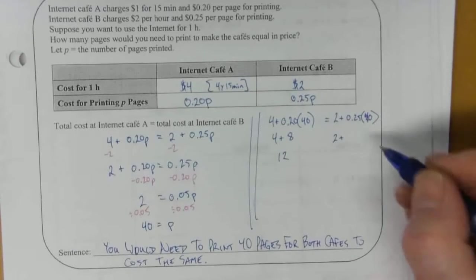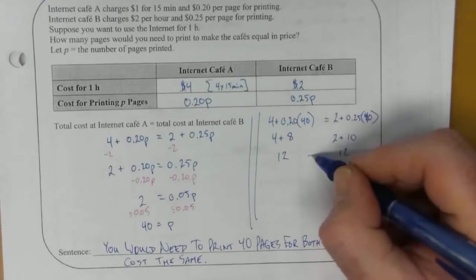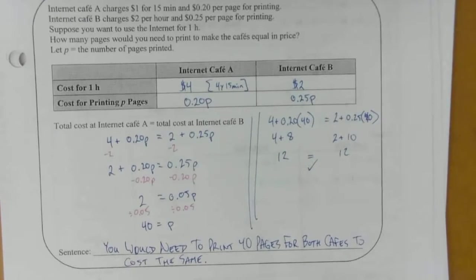This side is going to be 12. This side is going to be 2 plus 10 which is also 12. Those two match so we're good. Our calculations are right.